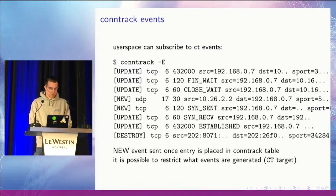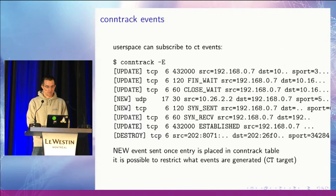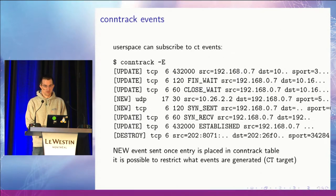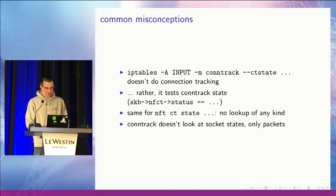Conntrack can also do byte accounting and packet accounting to see how much data was transferred on a connection. It's also possible to restrict what kinds of events are generated, so on very large setups where there are a lot of events you can use the IP tables CT target to restrict what kind of events you are interested in to reduce the load.